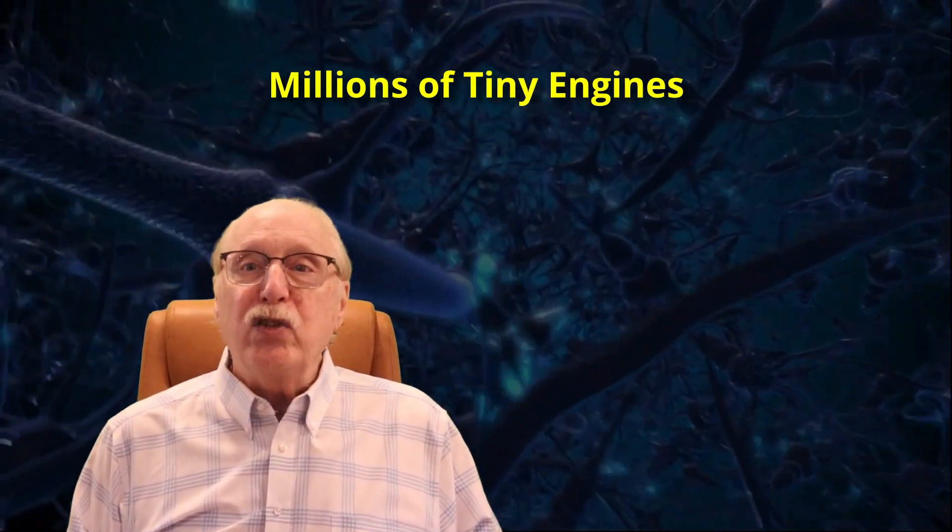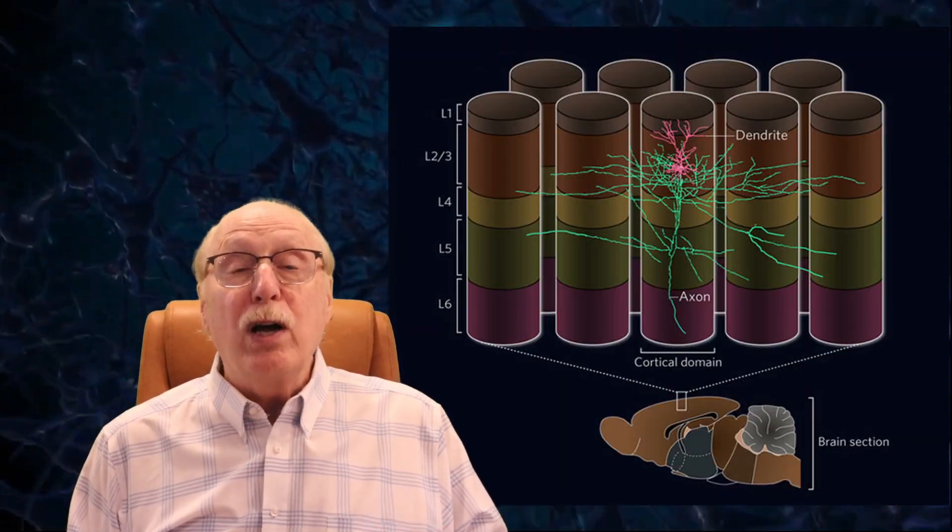Let's break that down. The brain has three major parts: the brain stem, which keeps us alive by managing things like heartbeat and breathing; the cerebellum, which handles coordination and motor learning; and at the top, the neocortex, where conscious thought, planning, and reasoning happen. That's where the cortical columns live.